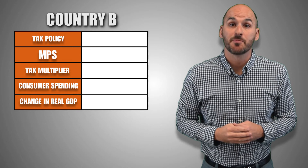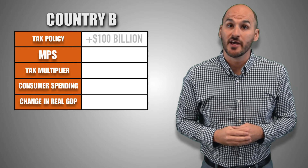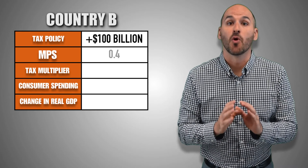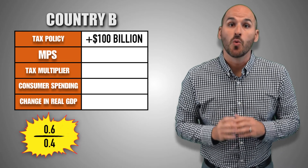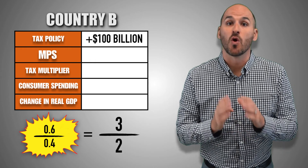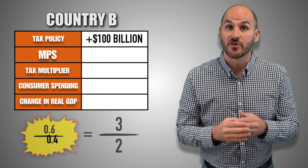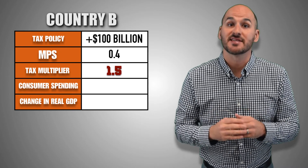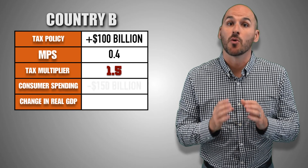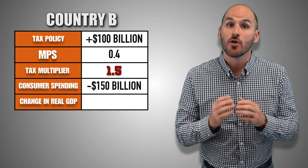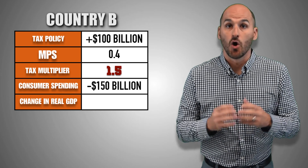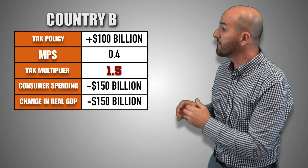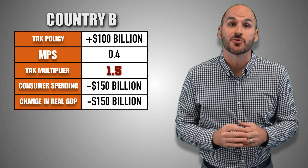Now suppose the government of Country B increases personal income taxes by $100 billion, and the MPS in Country B is 0.4. The tax multiplier is 1.5. After the contractionary fiscal policy is implemented, consumers lose disposable income as taxes increase, leading to a $150 billion decrease in consumer spending through the multiplier effect. Ultimately, a $100 billion increase in personal taxes leads to a $150 billion decrease in real GDP output in Country B.